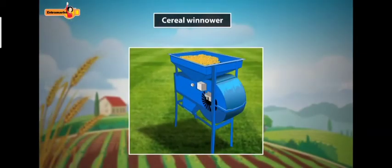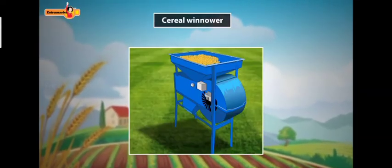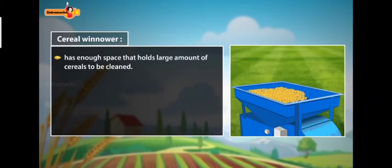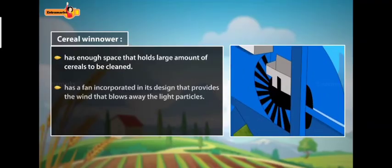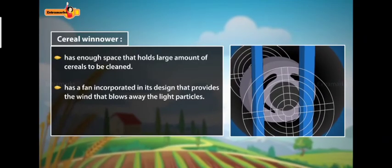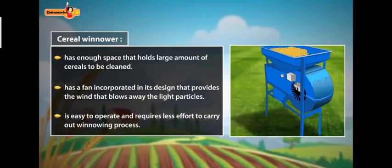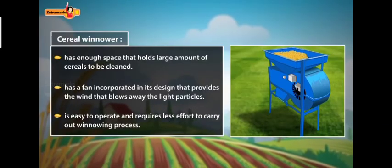Due to the limitations of traditional winnowing processes, nowadays cereal winnower machines are used to carry out the winnowing process. A cereal winnower machine has enough space that holds large amounts of cereals to be cleaned. It has a fan incorporated in its design that provides the wind that blows away the light particles. Thus, the cereal winnower is easy to operate and requires less effort to carry out winnowing process.